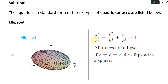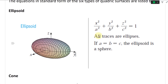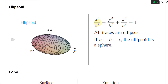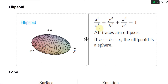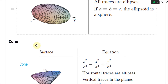So you have the ellipsoid right here. We set up this equation: x squared over a squared plus y squared over b squared plus z squared over c squared equals one. All the terms are on the left side of the equation and it equals one. All the traces are ellipses. And if a, b, and c are equal, then the ellipsoid is a sphere.